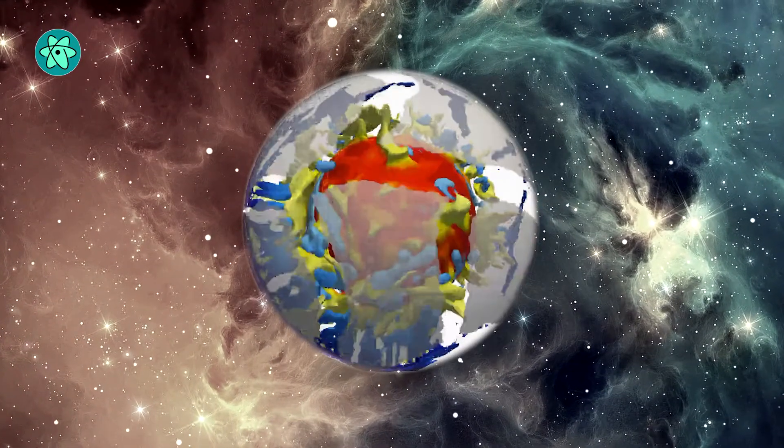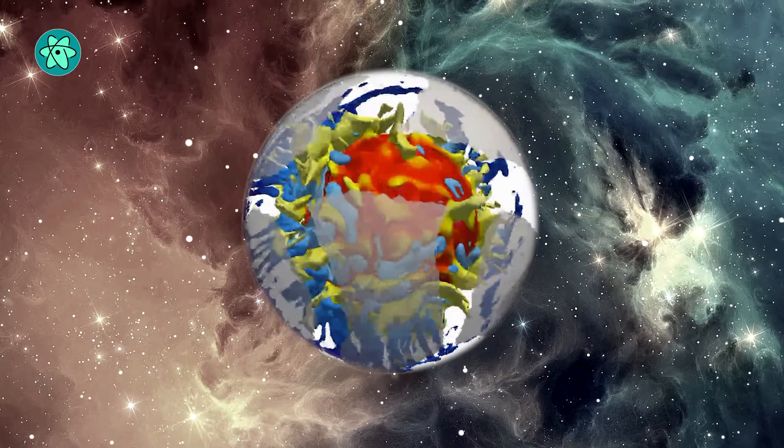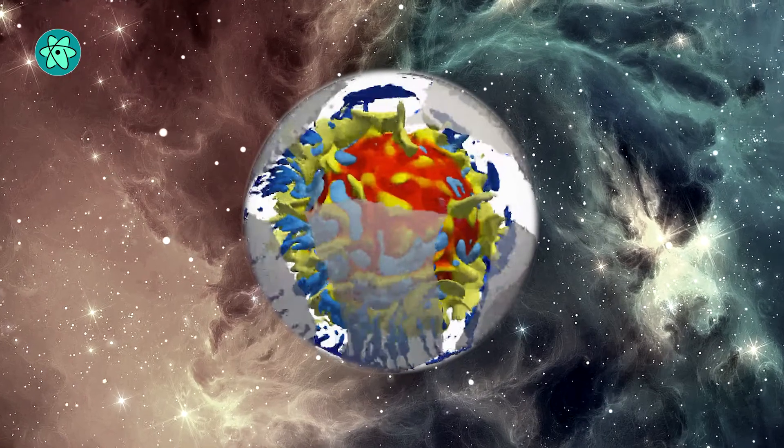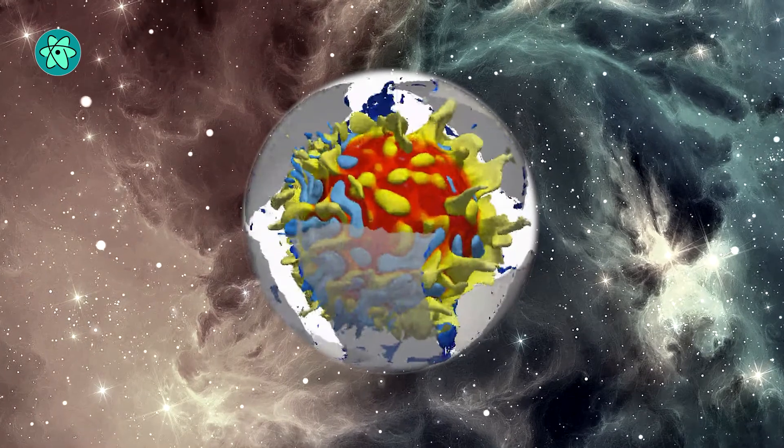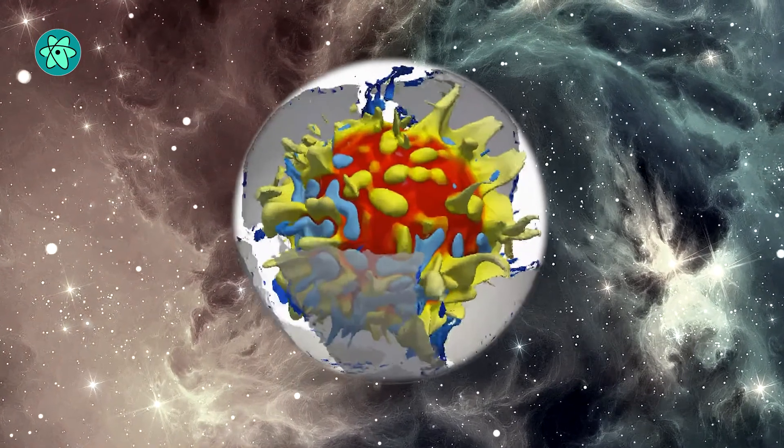The research team used a supercomputer to simulate how supercontinents form. They found that because the Earth has been cooling for billions of years, the thickness and strength of the plates under the oceans reduce with time.